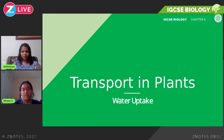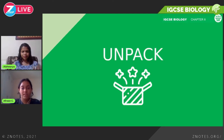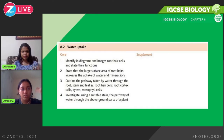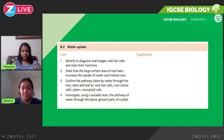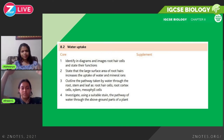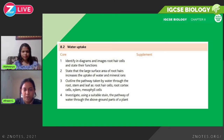The second part is water uptake, which is an extension of the first part. The syllabus needs you to know what a root hair cell is, and you need to be able to state its functions and its adaptations. You also need to know the path taken by water from the root to the leaves and how it exits the plant. The last part is a Paper 6 question, which you'll be able to figure out by the end of this section.